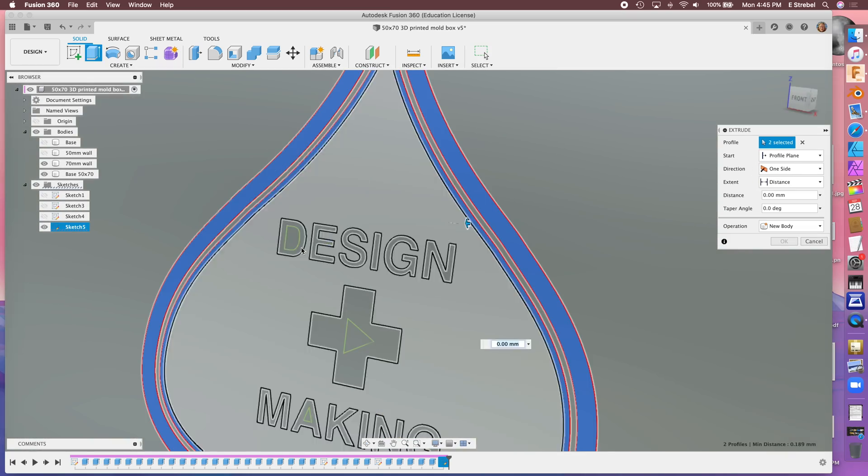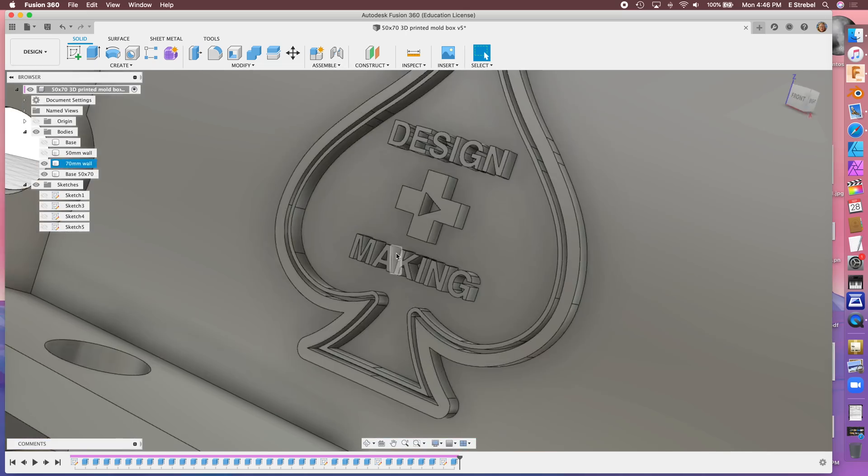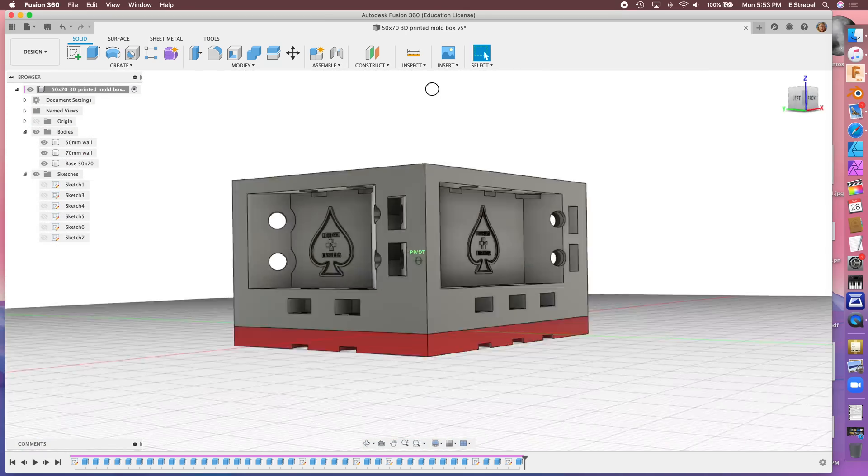Let's add a little logo onto the sides of the mold and on the bottom, and then we're just about ready to print the first mold box.